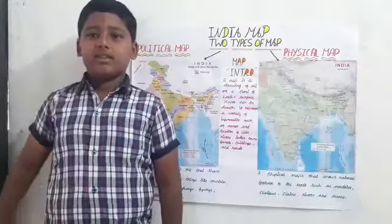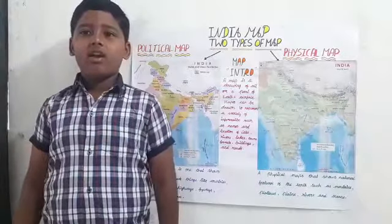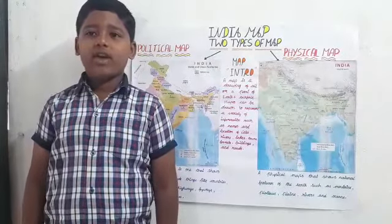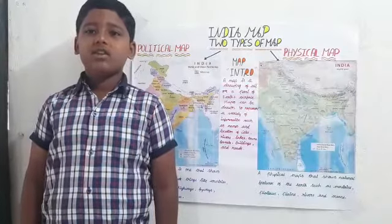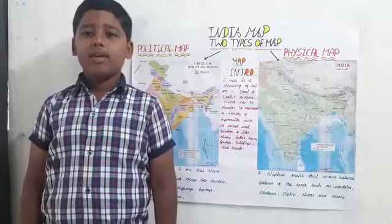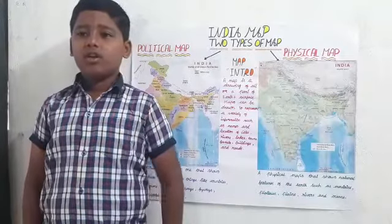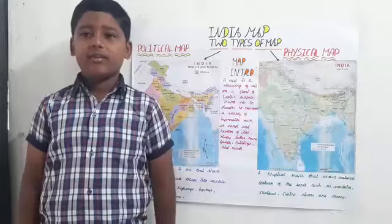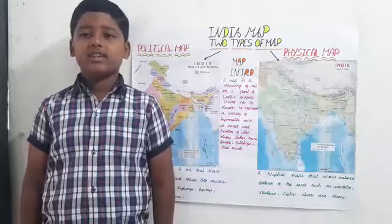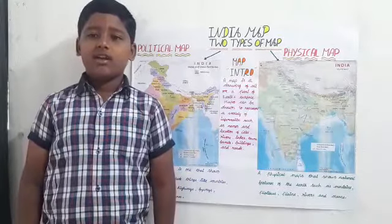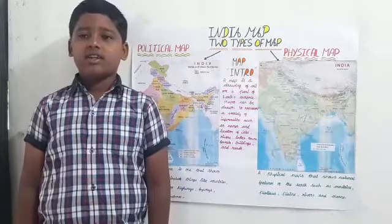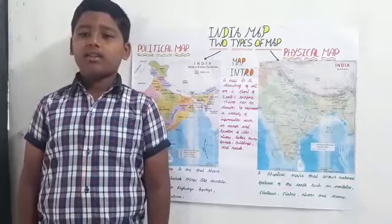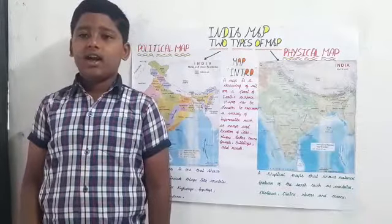A map is a drawing of all or a part of earth's surface. A map can be drawn to represent a variety of information such as names and locations of cities, rivers, lakes, towns, forests, buildings and roads.